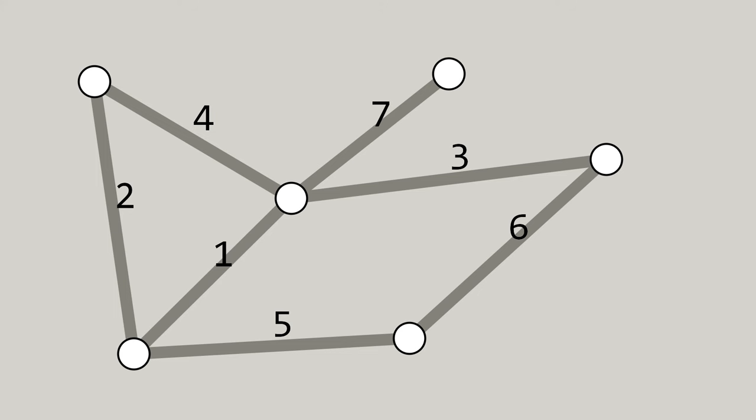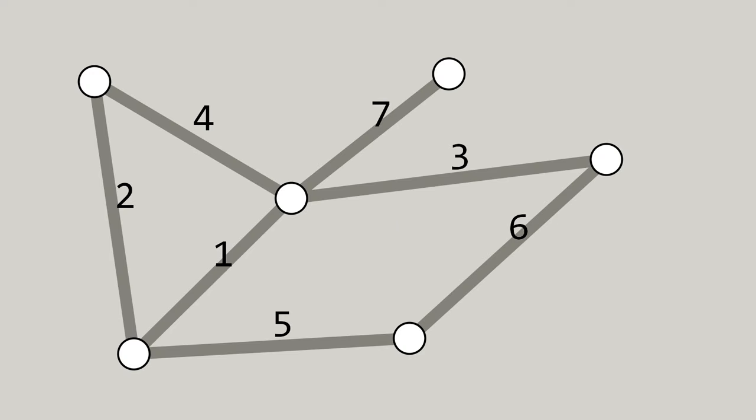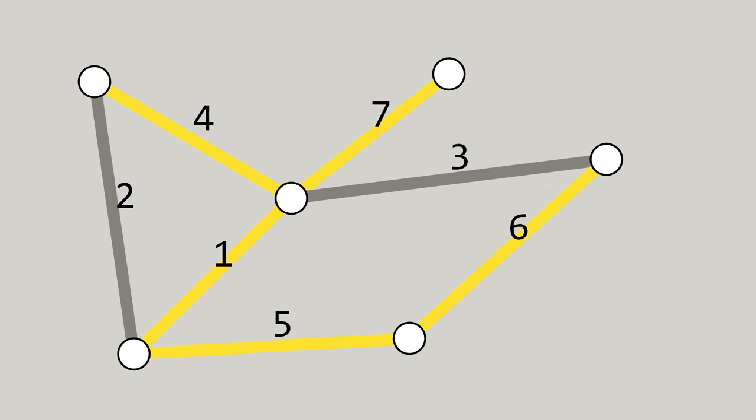What we've been looking for in Kruskal's algorithm is called a minimum spanning tree. A spanning tree of a graph is some subset of the edges in that graph that still touches all of the vertices, but using as few edges as possible. And the minimum spanning tree is the spanning tree where the sum of all of the weights of the edges is as small as possible.